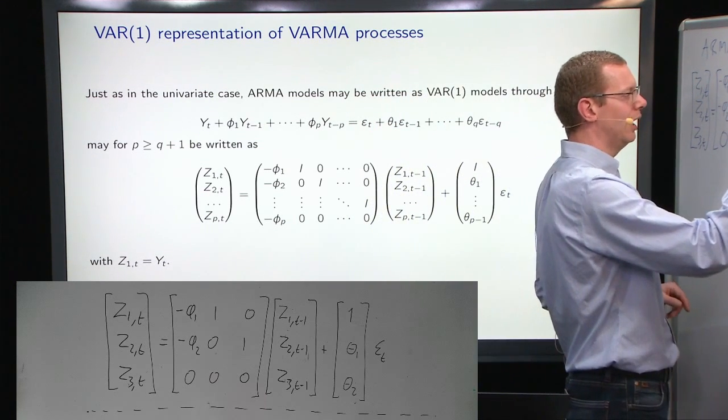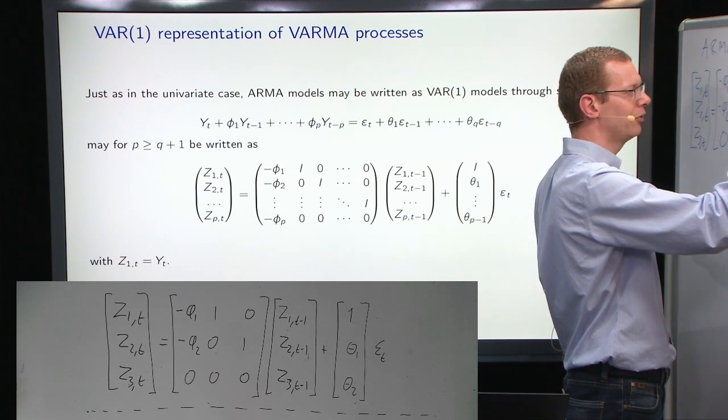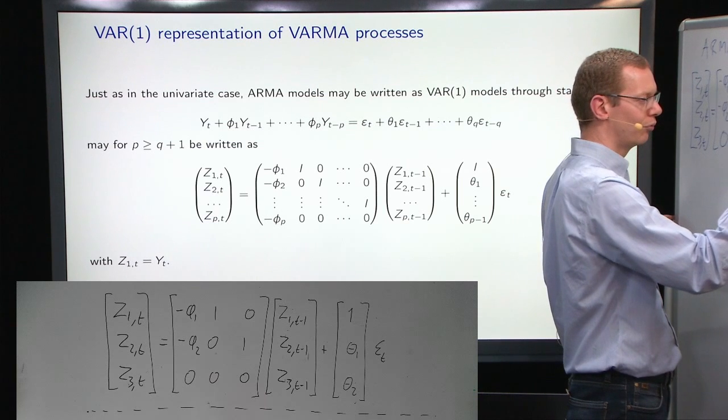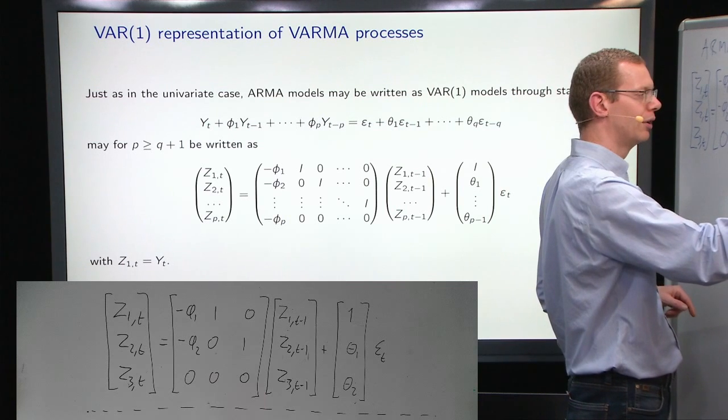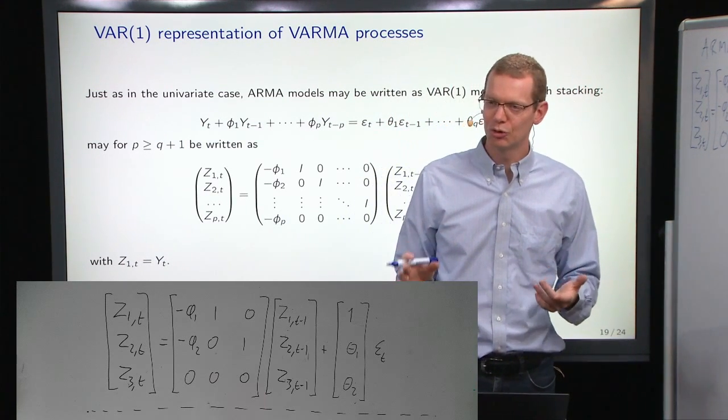So, what we now need to add is the noise, where we have an identity matrix up here at first, and then we have the two moving average parameter matrices, and then we have epsilon t. So, that's the representation of an ARMA(2,2) model.